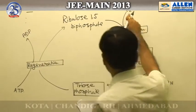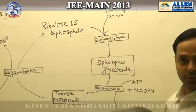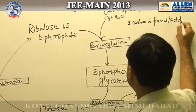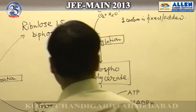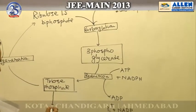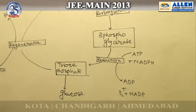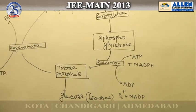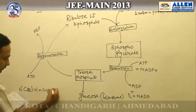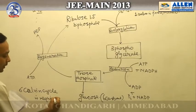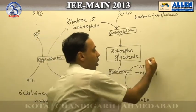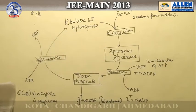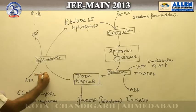In the first step, carbon dioxide is introduced and one carbon is fixed or added. Glucose has 6 carbons, so 6 Calvin cycles are required in total. In the second step, two molecules of ATP are consumed. In the third step, during regeneration, one molecule of ATP is consumed.